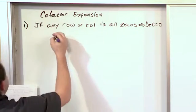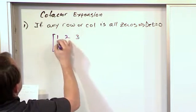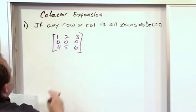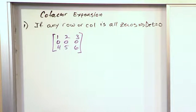What if you have something like 1, 2, 3; 0, 0, 0; 4, 5, 6? This is our matrix and we want to find the determinant of this matrix.